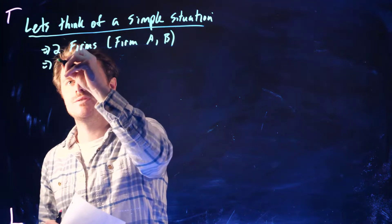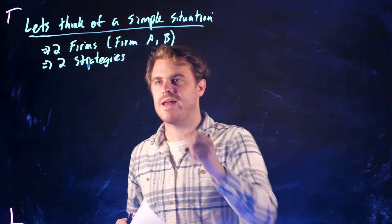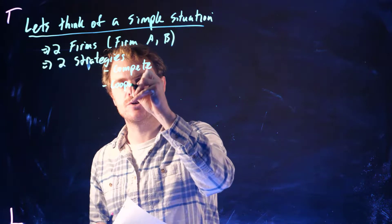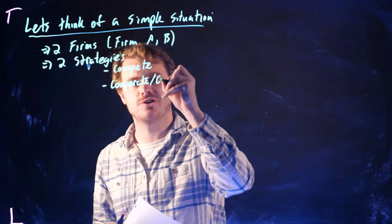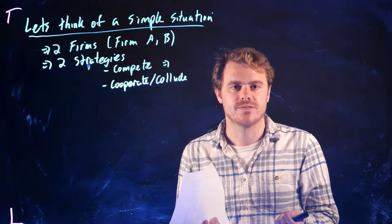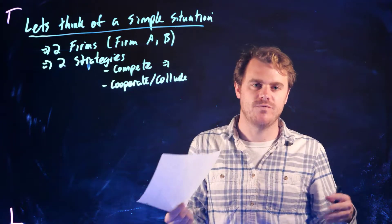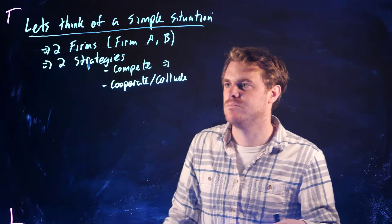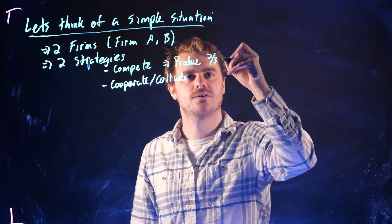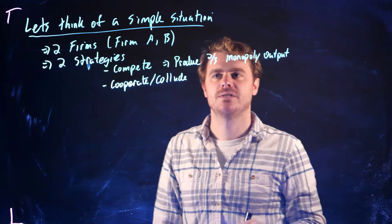There are two strategies: one is to compete, and the other is to cooperate or collude. If they compete, each firm produces two-thirds of the monopoly output, meaning together they produce four-thirds of the monopoly output — more than the monopoly outcome. If they cooperate, they collude to split the monopoly output, so each produces half.